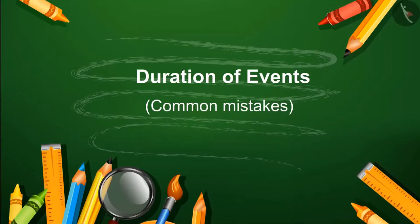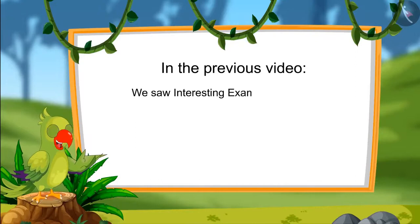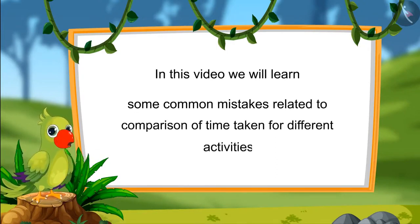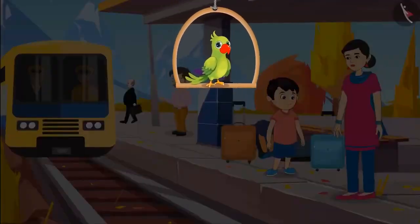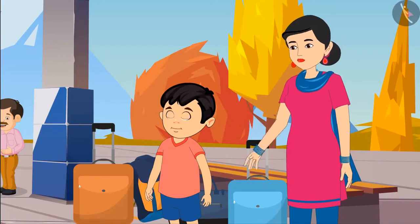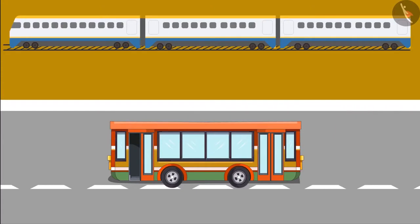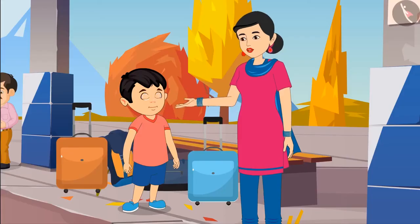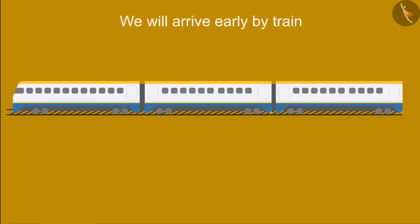Some common mistakes associated with finding the duration of events. Hello kids. In the previous video we saw some interesting examples of comparing the time taken in different activities. In this video we will learn about some common mistakes related to comparing time taken in different activities. Chotu is going with his mother to his grandparents' house by train today. Chotu says 'Mom, this train is so long — it means it will take us longer to reach my grandparents' house.' But his mother corrects him: 'No Chotu, the train runs faster than the bus. The length of the train is more but it runs faster, so we will reach by train quickly.'